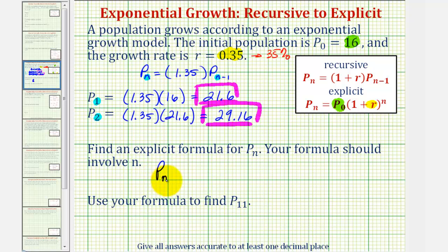P sub n equals p sub zero, which is 16, times the quantity one plus r, which is 1.35, raised to the power of n.